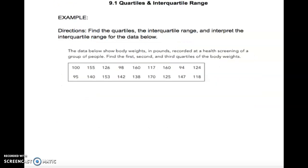Let's actually do an example together. So you're going to find the quartiles, the interquartile range, and then you have to interpret the interquartile range. Interpret means write a sentence for this data. So this data shows body weights in pounds recorded at a health screening of a group of people. So first thing we have to do is order from least to greatest. So while I'm ordering from least to greatest, you should do the same. I suggest as you use your numbers, cross them off so you don't use them again.